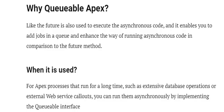Now let's talk about queueable jobs. Like future methods, queueable jobs are also used to execute asynchronous code and enable you to add jobs to a queue, enhancing the way asynchronous code runs. In comparison to the future method, you can queue jobs to enhance how they run asynchronously.